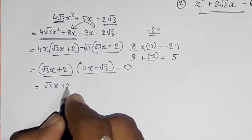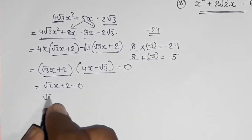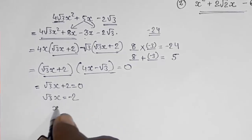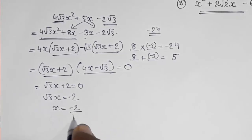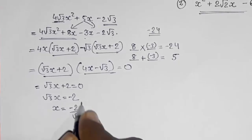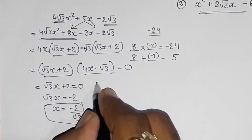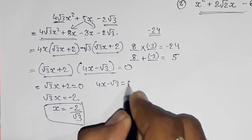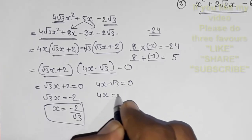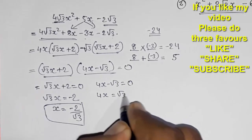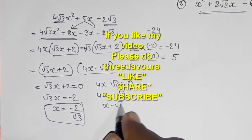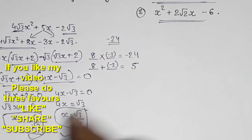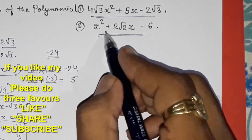Setting each factor equal to zero: for √3x + 2 = 0, we get √3x = −2, so x = −2/√3. This is the first zero. For 4x − √3 = 0, we get 4x = √3, so x = √3/4. These are the two zeros of the first polynomial.